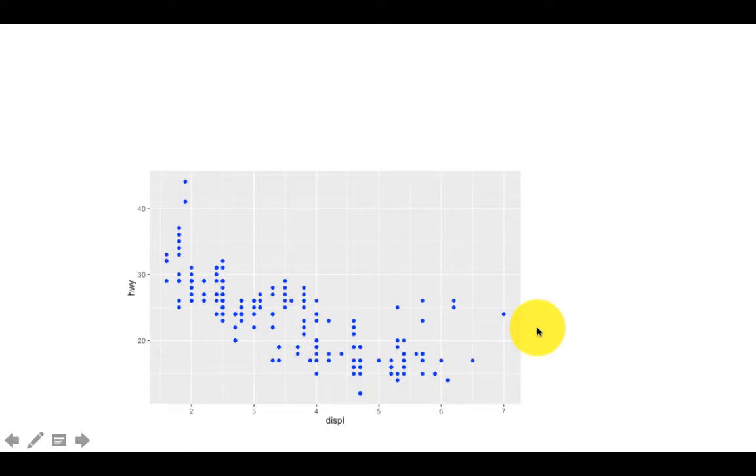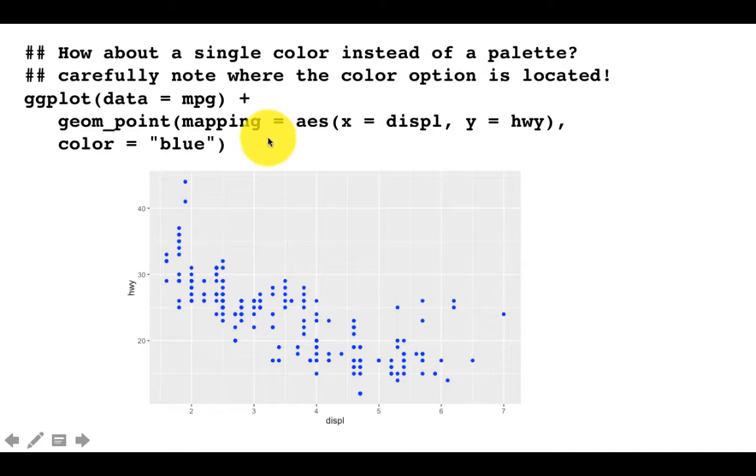Suppose I want all the points to be plotted in just one color - blue. Notice the difference: I'm saying geom_point mapping equals aes x equals displ, y equals hwy, and aesthetics ended here. Then outside of aesthetics in geom_point I'm saying color equals blue.